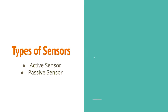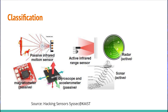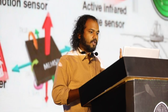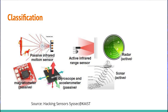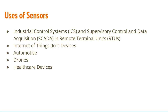There are two types of sensors: active and passive. Infrared motion sensor, magnetometer, gyroscope, and accelerometer are examples of passive sensors. Infrared range sensor, radar, and sonar are examples of active sensors.